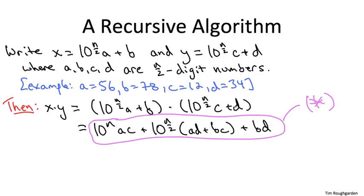You'll notice, staring at the expression star, there are four relevant products, each involving a pair of these smaller numbers, namely ac, ad, bc, and bd. So why not compute each of those four products recursively? After all, the inputs will be smaller.